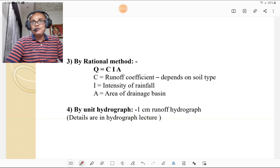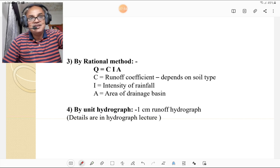Fourth method is by unit hydrograph. One centimeter runoff hydrograph is used or is termed as a unit hydrograph. And by using the curve of discharge or using the graph of discharge versus time we can calculate the runoff. And details we are going to discuss in hydrograph lecture.